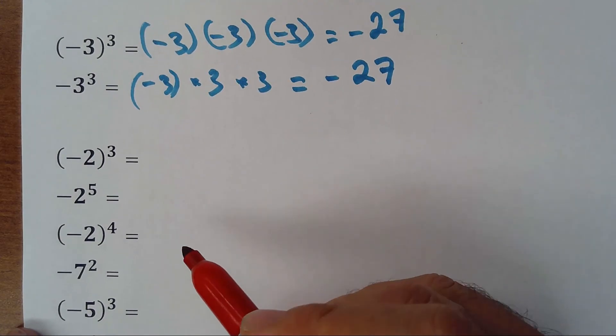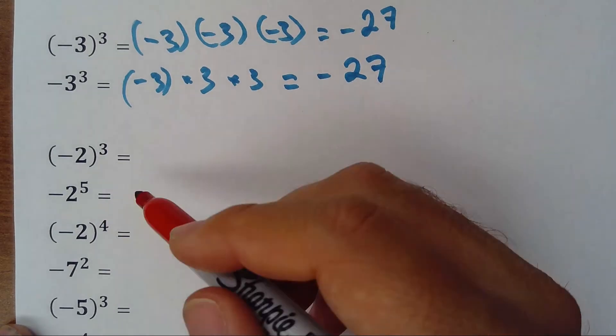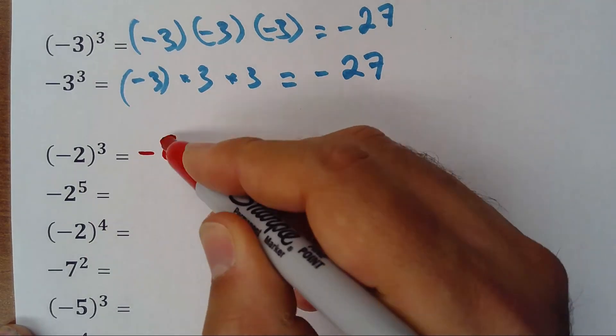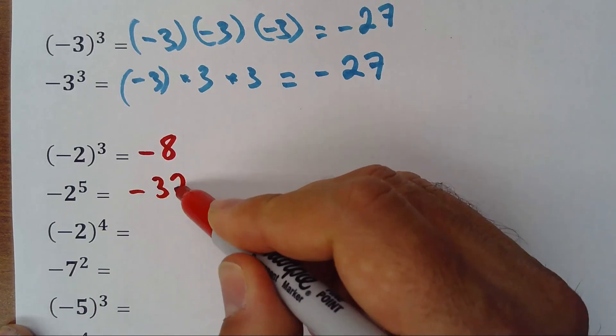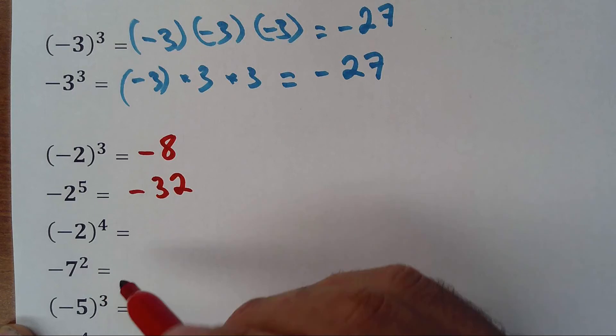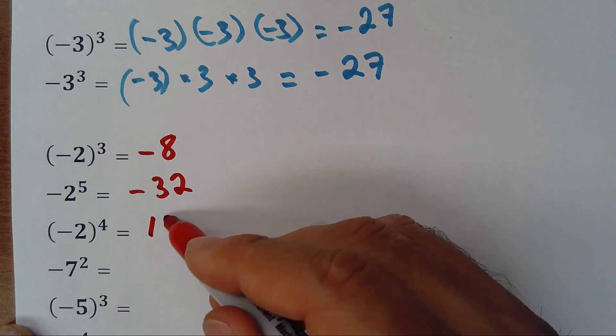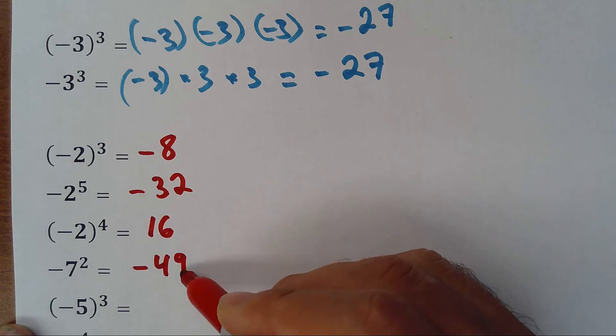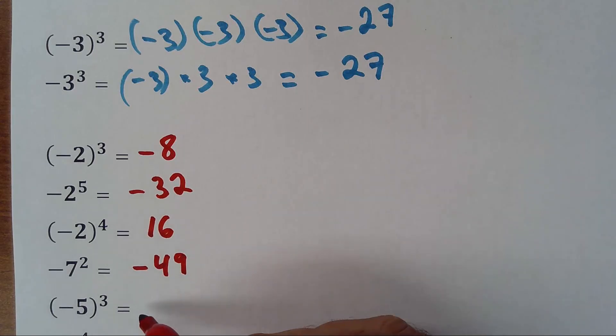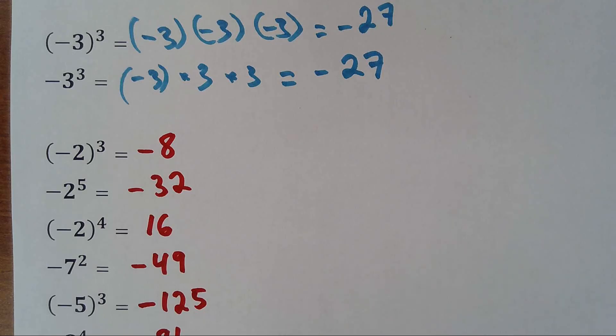Okay, I hope you pause the video and solve the exercises. Now, let's check it. So, this one will be negative 8. This is negative 32. This one will be positive 16. This one negative 49. This one will be negative 125. And this one will be negative 81. Okay? 3 times 3 is 9, and 9 times 9 is 81.